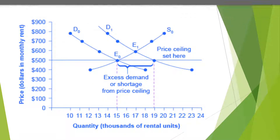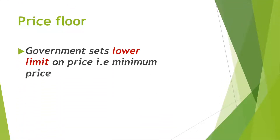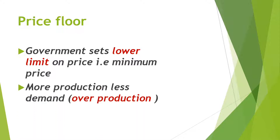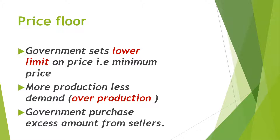Next is the Price Floor. What does the government do in a price floor? It is the complete opposite of the price ceiling. Price ceiling sets a maximum limit, while price floor sets a minimum limit. In the price ceiling case, supply was reduced and demand was increased. In the price floor case, demand is reduced and supply is increased, so the price falls.